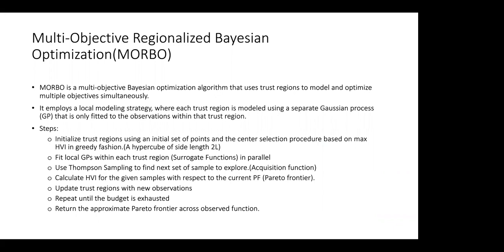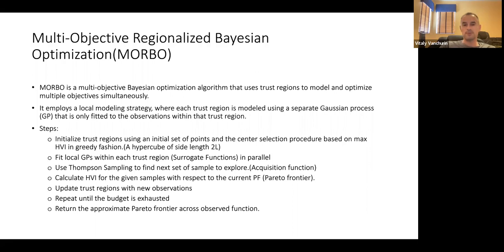What MORBO says is: if the domain space is too large, finding the posterior requires inverting the covariance matrix, which has time complexity O(n³) where n is the number of data points. This grows very large with more points. In high-dimensional space you have many points, so they divide the space and do Bayesian optimization on each region separately.